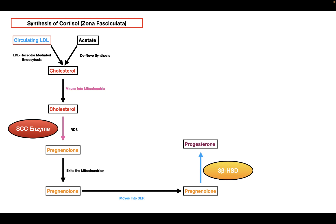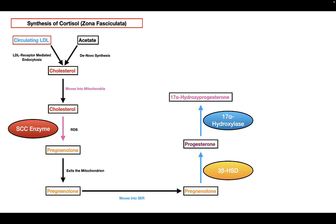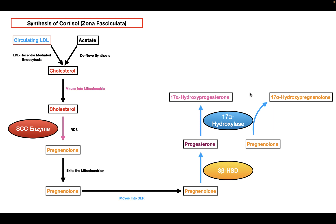Once progesterone is formed in the smooth endoplasmic reticulum, it is converted into 17-alpha-hydroxyprogesterone by the enzyme 17-alpha-hydroxylase. The cells in the zona fasciculata also have an alternative pathway: some pregnenolone can be converted into 17-alpha-hydroxypregnenolone by 17-alpha-hydroxylase, and the 17-alpha-hydroxypregnenolone can then be converted into 17-alpha-hydroxyprogesterone by 3-beta-HSD. So there are two pathways by which 17-alpha-hydroxyprogesterone can be formed.